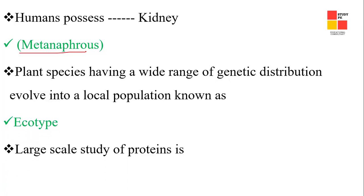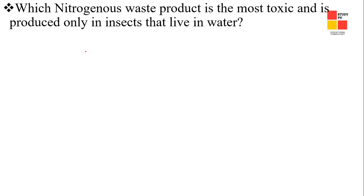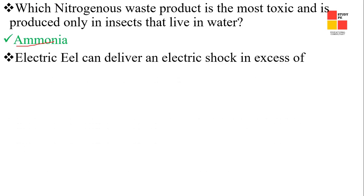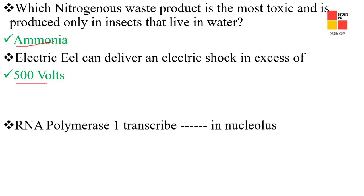Next one: the large-scale study of proteins is called proteomics. Next one: the richest nitrogenous base product that is most toxic and produced only in insects living in water — the right answer is ammonia.